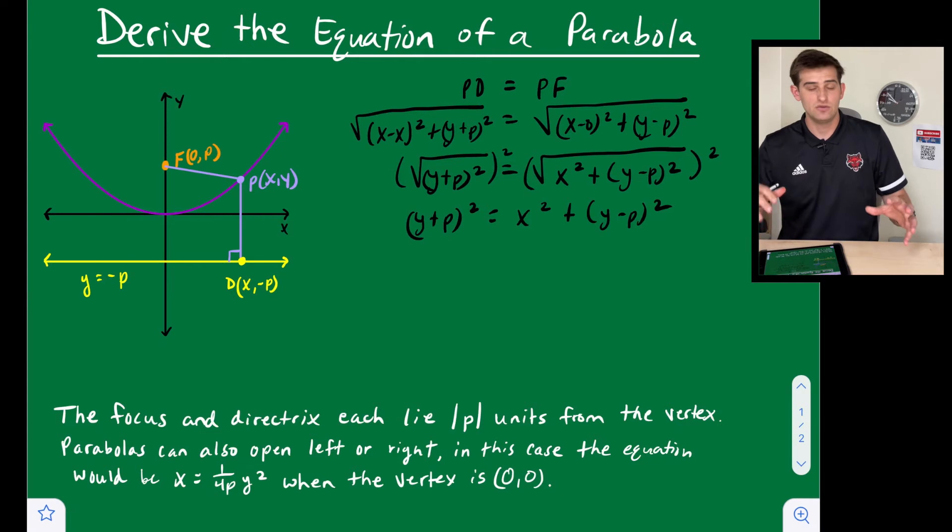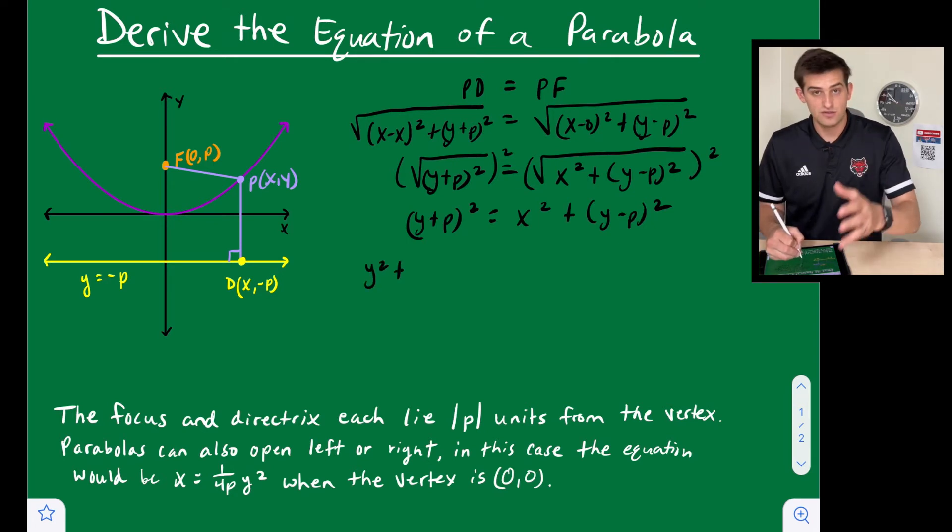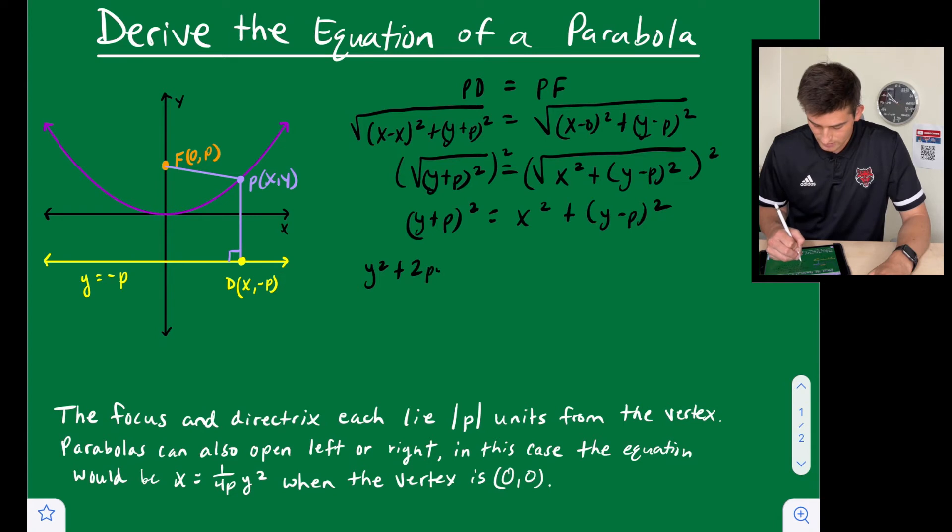And now we have two squares of a binomial: (y + p)² and (y - p)². So let's expand those. This would give us y² + 2py + p². And over here we have x² plus once again y², but now this is going to be minus 2py, and then plus p².